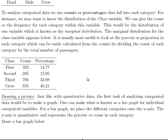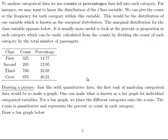This would be the marginal distribution of passenger class. There were 325 passengers in first class, corresponding to 14.77%, 12.95% in second, and so forth. So we have first, second, third, and crew passengers.